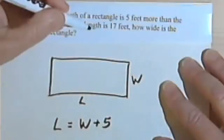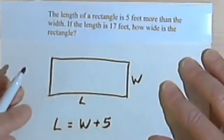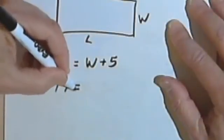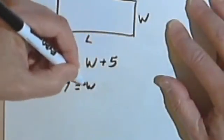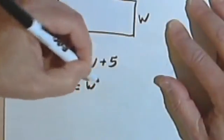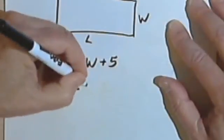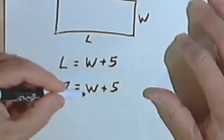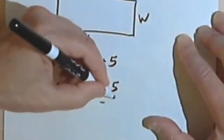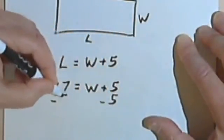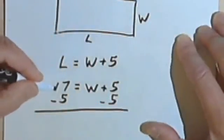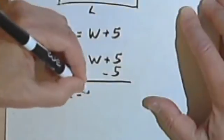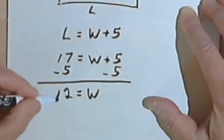And the other thing it tells me is that the length is 17 feet. So instead of the L, I'm going to put it as 17. So 17 equals W for the width plus 5. And now I want to find out what the width is, so I'll subtract 5 from both sides. 17 minus 5 is 12, and that's going to be the width, 12 feet.